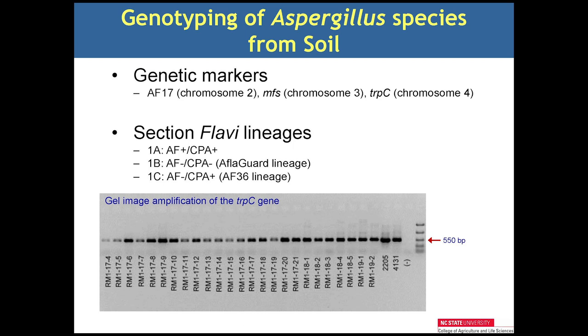As far as genotyping is concerned, we used three genetic markers. We used AF17, which is a microsatellite marker — it's useful to determine more recent relationships. We used MFS, which is the aflatoxin gene cluster. And the TRIP-C gene, which is important for lineage assessment. Based on previous studies conducted at NC State, we can group members of section flavi into three distinct clades. Clade 1A includes those that produce both aflatoxin and CPA. Clade 1B are those that produce neither aflatoxin nor CPA — this is the clade to which AflaGard belongs. Clade 1C are those that don't produce aflatoxin but do produce CPA — this is the clade to which AF36 belongs.